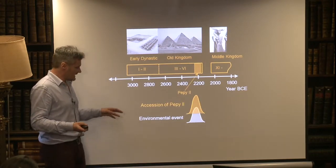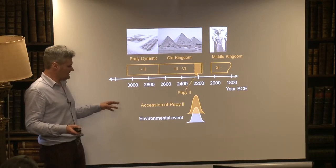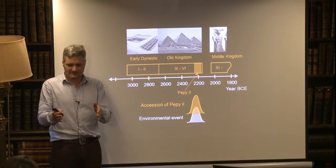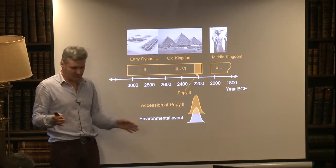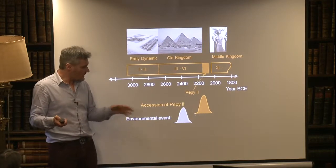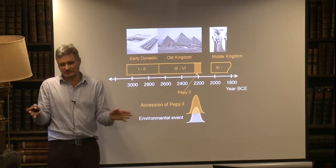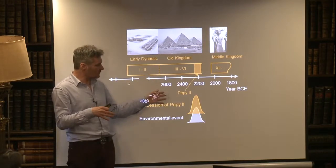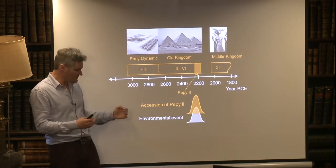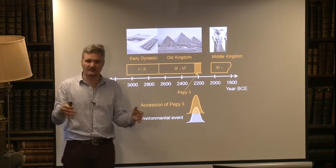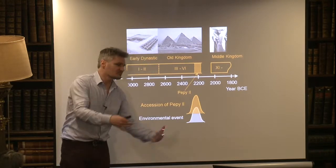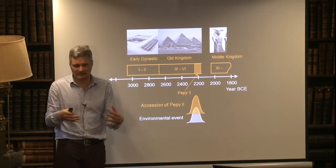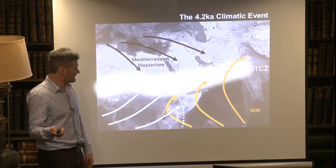The object of my current work is to date the accession of Pepe II — the beginning of his reign — date the environmental event, and see whether there's a relationship between the two. Clearly, if climate played a role in the downfall of the Old Kingdom, then the environmental event had to precede his reign with knock-on effects. If it post-dated his reign, we know it's more likely to have had very little to do with the fall of the Old Kingdom.